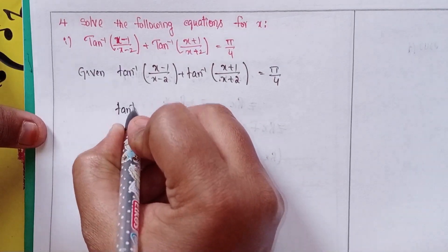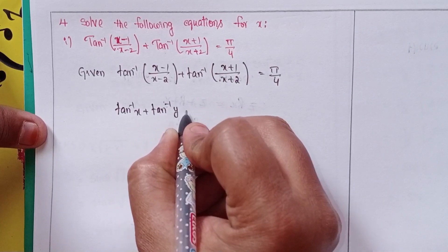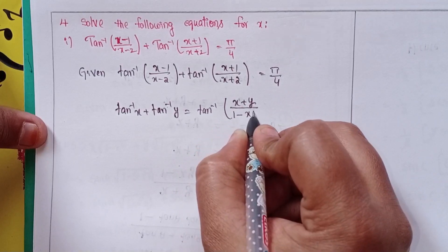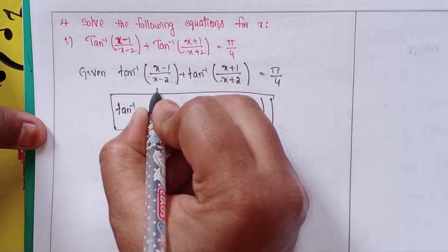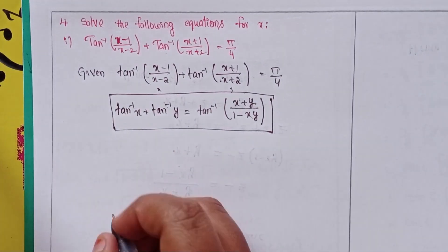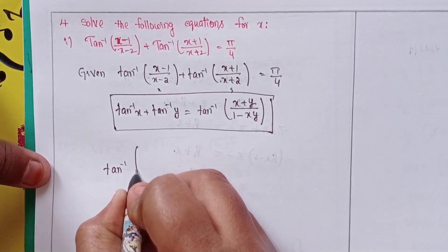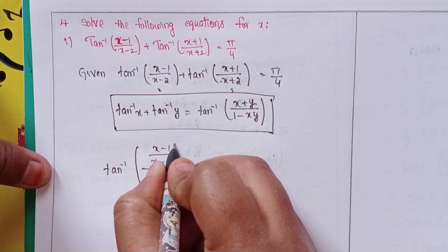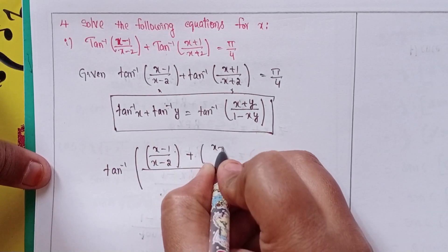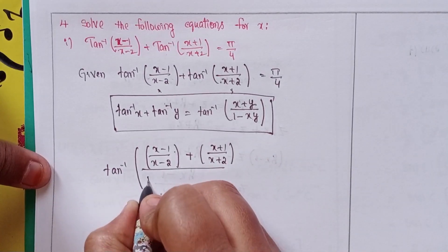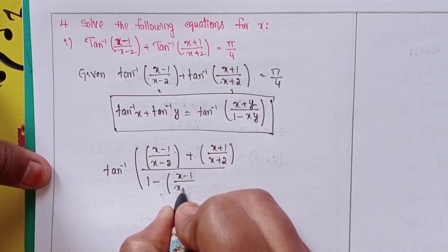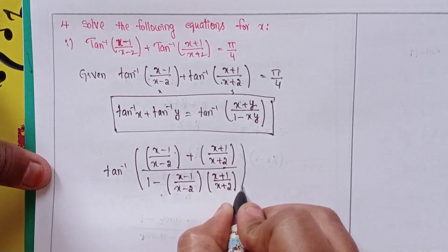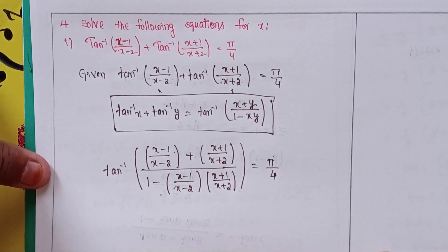Using the formula: tan⁻¹x + tan⁻¹y = tan⁻¹[(x+y)/(1−xy)]. Here x means (x−1)/(x−2) and y means (x+1)/(x+2). So we apply: tan⁻¹ of [(x−1)/(x−2) + (x+1)/(x+2)] divided by [1 − (x−1)/(x−2)·(x+1)/(x+2)] = π/4.